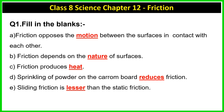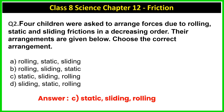Question C: Friction produces dash. So friction produces heat. Question D: Sprinkling of powder on the carom board dash the friction. When we sprinkle powder on the carom board, the board gets a smooth surface, so it reduces the friction. Question E: Sliding friction is dash than the static friction. Sliding friction is lesser than static friction.